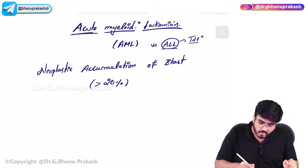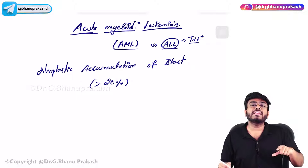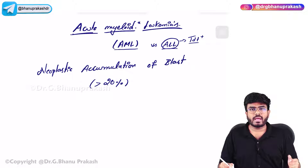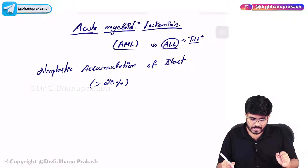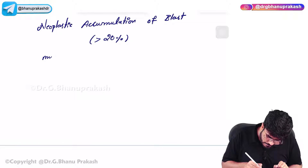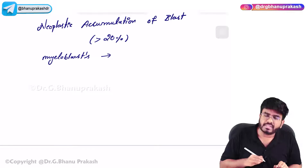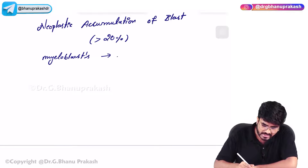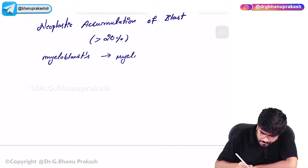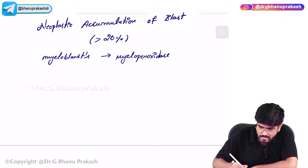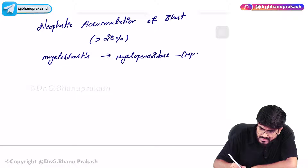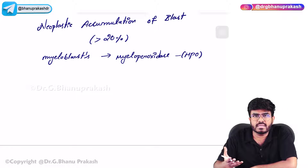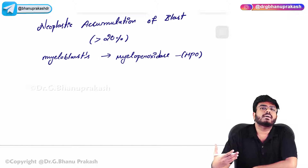How to identify the myeloid stem cells - the myeloblasts? Myeloblasts are going to show positivity for a chemical called myeloperoxidase, also called MPO. For oxygen-dependent killing, the neutrophils have this myeloperoxidase, with which they can kill microbes after phagocytosis.